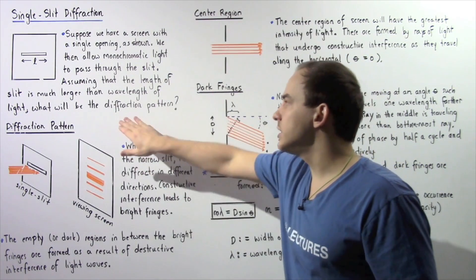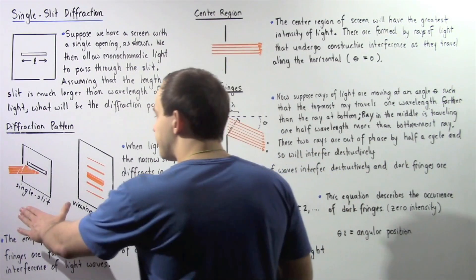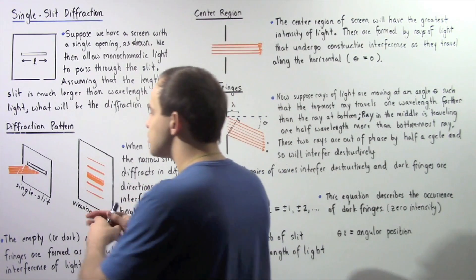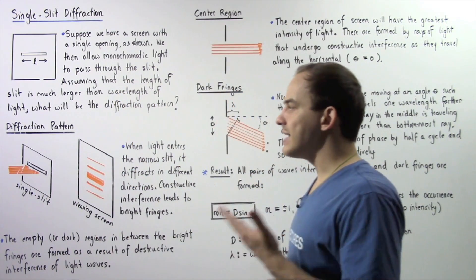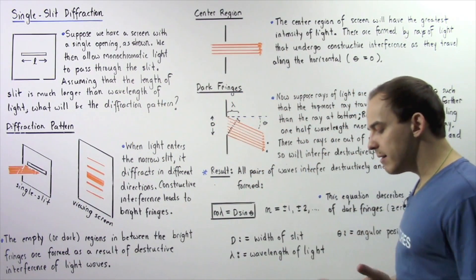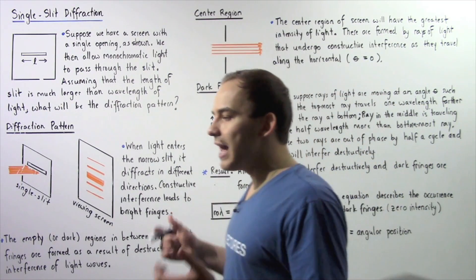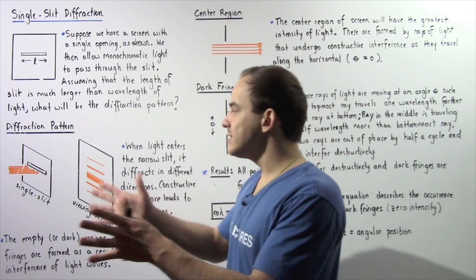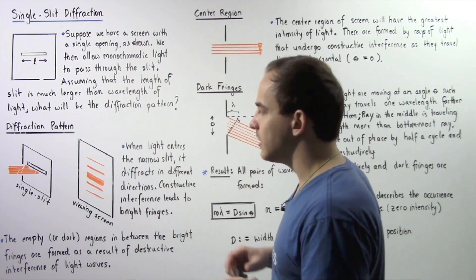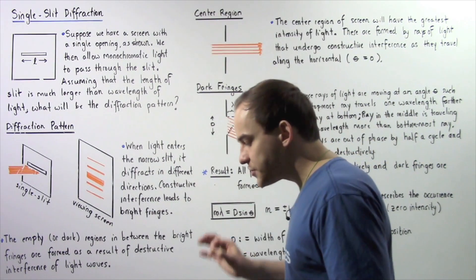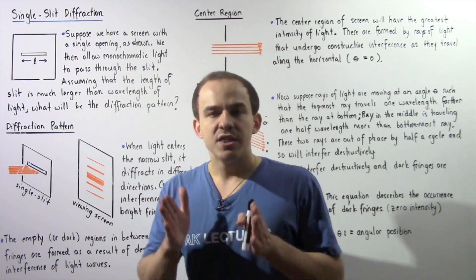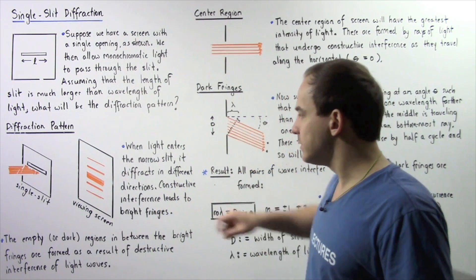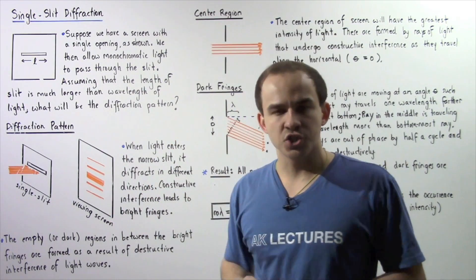So what will be the diffraction pattern? Here we have the single slit, and we allow the monochromatic light to pass through the opening. That acts as an obstacle. Remember, whenever there is an obstacle and light travels past it, diffraction will take place and the rays of light will diffract in different directions. When these waves of light interfere constructively, that will lead to bright fringes — bright lines — which we will be able to see on the viewing screen.